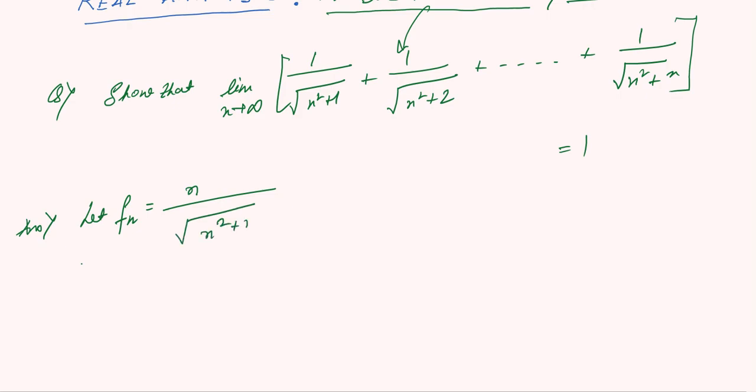Then limit n tends to infinity of f_n is equal to limit n tends to infinity of 1 by root of (1 plus 1 by n), and this is equal to 1. This is our first assumption function.